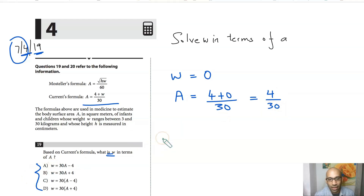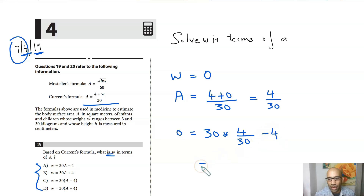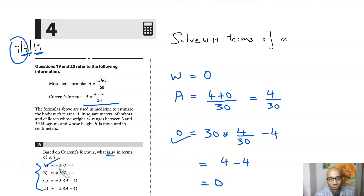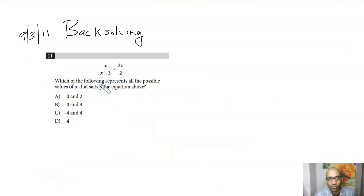Now you check: if w equals 0, what does the first answer choice give? You get 30 times 4/30 minus 4, which equals 4 minus 4, which equals 0. That checks out, so the first one is the correct answer. This is the technique of back-solving.